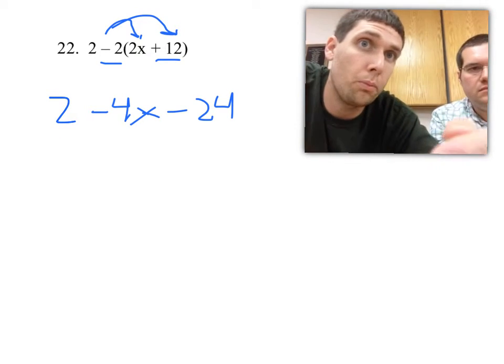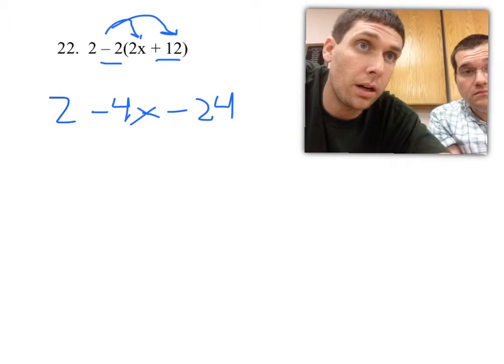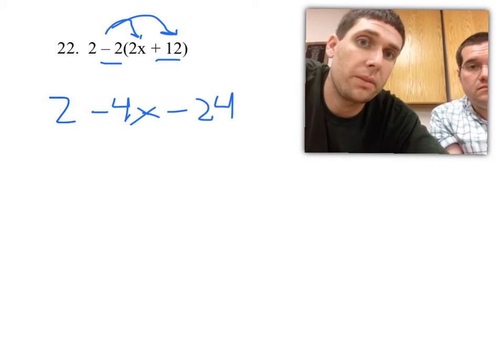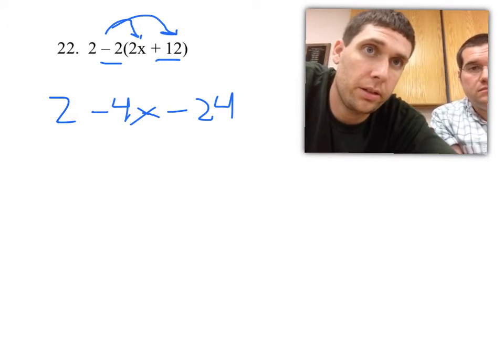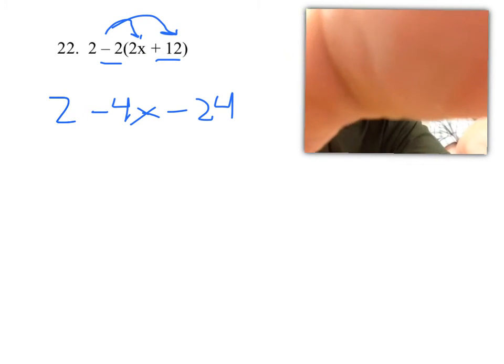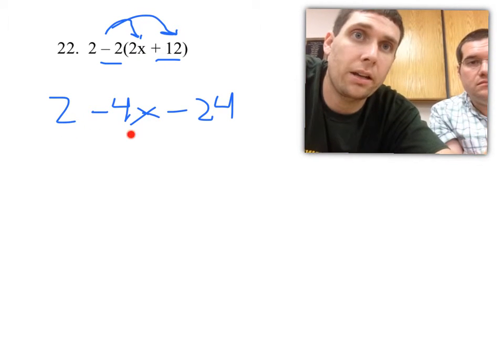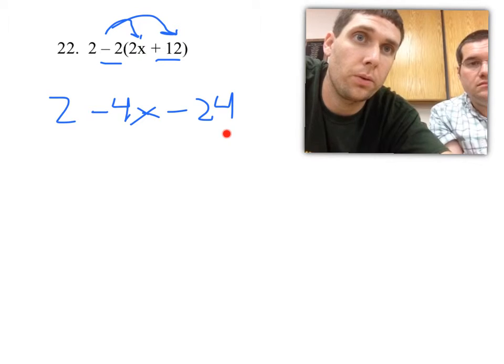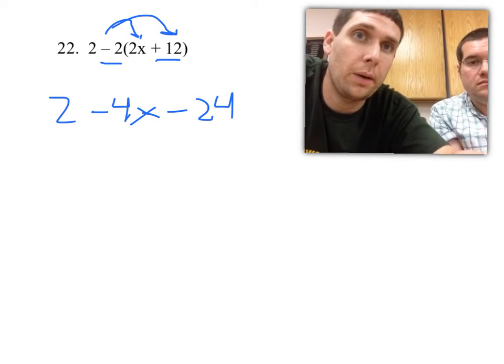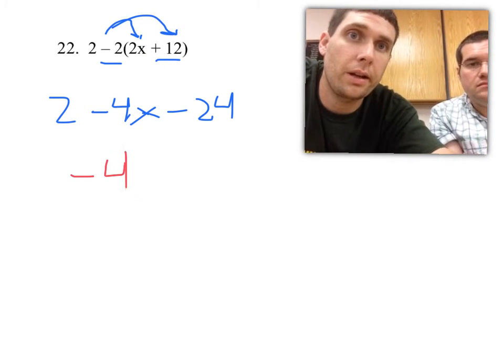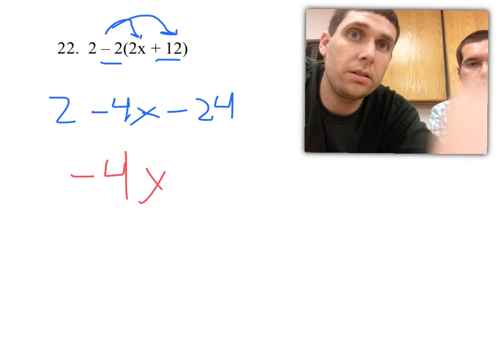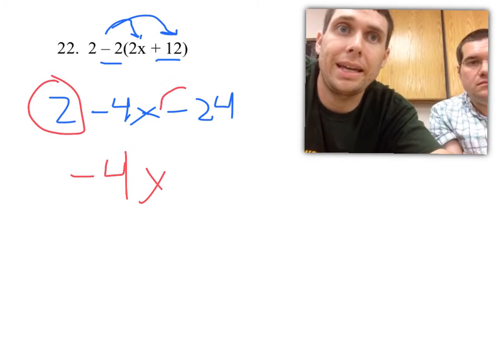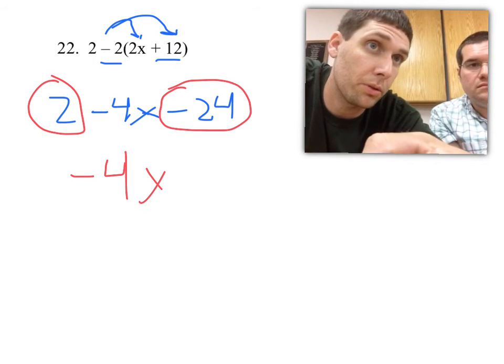Now there's no parentheses. Distributing is done. We need to go ahead and do the next step, which would be combine the like terms. I have three terms here. I've got a 2. I have a negative 4x. And I have a negative 24. There's nothing I can combine with that negative 4x. I'm going to leave that right out front. But I could combine my positive 2 and my negative 24 because those are both number terms.